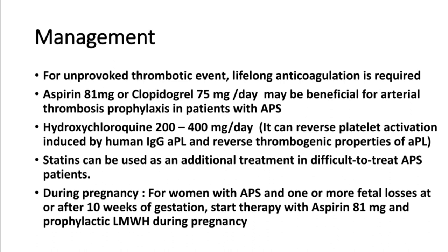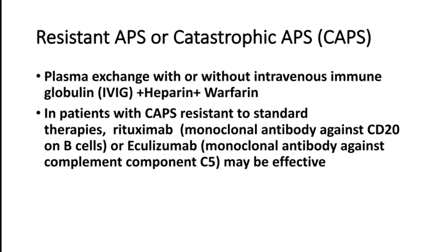During pregnancy, patients with APS and one or more fetal losses at 10 weeks of gestation should be given aspirin and prophylactic low molecular weight heparin. It is very important that patients with a history of antiphospholipid syndrome or positive antiphospholipid antibodies in pregnancy should be treated with aspirin plus low molecular weight heparin throughout pregnancy.